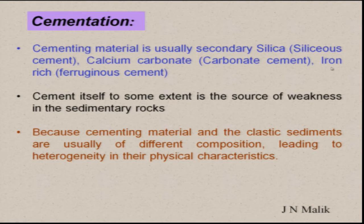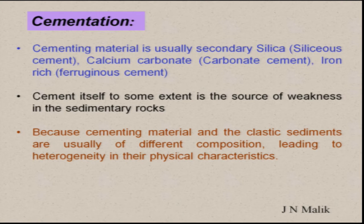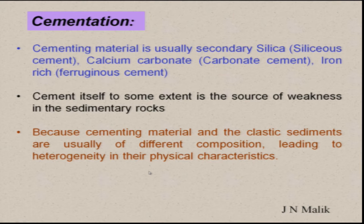Cementation material is usually secondary silica — siliceous cement. If you have calcium carbonate, we say carbonate cement; or it is ferromagnesian cement, which is iron-rich. The hardest is the ferromagnesian cement. The cement itself is to some extent a source of weakness in clastic rocks, because the cementation material and the clastic sediments are usually of different composition — the clast is of different composition and the cement is of different composition — leading to heterogeneity of their physical characteristics. This can be siliceous, carbonate-rich, or iron-rich cement.